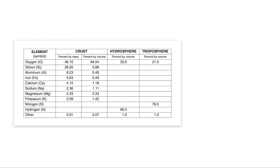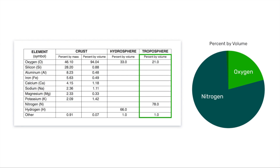Finally, let's look at the air we breathe — the lower part of the atmosphere known as the troposphere. There's a common misunderstanding, as most people think the air we breathe is mostly oxygen. In reality, 78% of the troposphere is actually nitrogen, with only 21% — less than a quarter — representing oxygen. And of course there are some other things mixed in, like CO₂, water vapor, and various other gases.